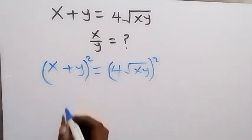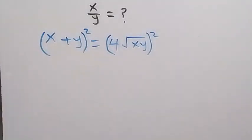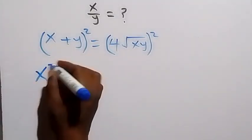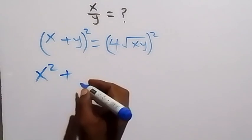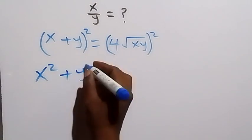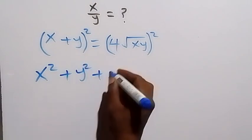And the square on this side, when we expand this, this will give us x squared plus y squared plus 2xy.